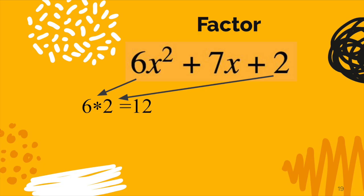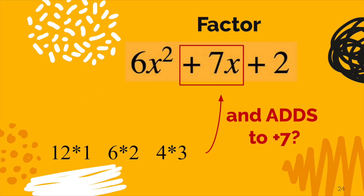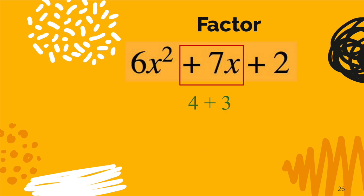And then you ask yourself, how do you make 12 through multiplication? What makes 12? Well, there's 12 times 1, there's 6 times 2, and there's 4 times 3. Now, you analyze that middle term, which is a 7, and you ask which of those combinations, the 12 and 1, 6 and 2, 4 and 3, which of those adds up to 7? Well, of course, it's the 4 and the 3. So we're going to highlight that. We're going to use 4 and 3.